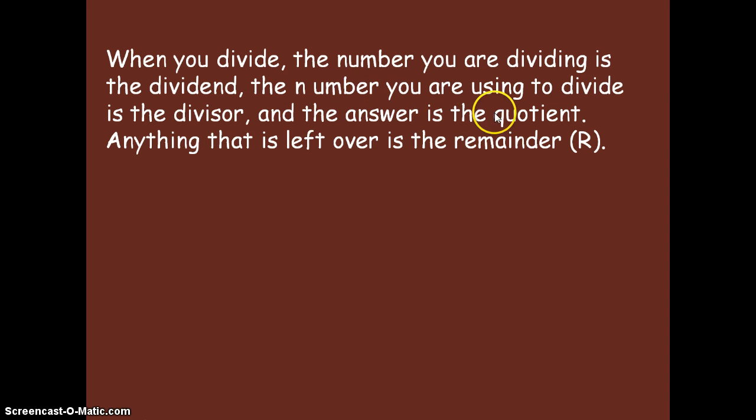And the answer is the quotient. So however many times the divisor goes into the dividend, that will be the quotient, that will be your answer. Anything that is left over is the remainder, which is denoted by a capital R. I have seen it with a lowercase r, but to stay consistent with the materials that we have been using, we're going to use the capital R.